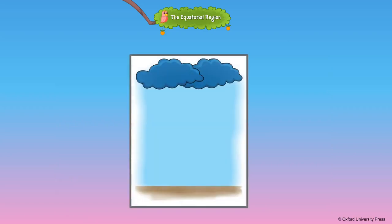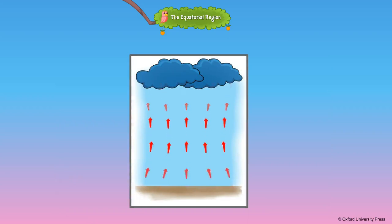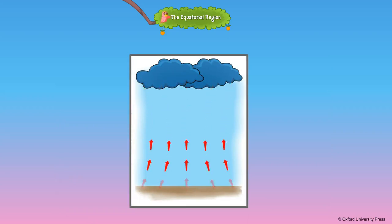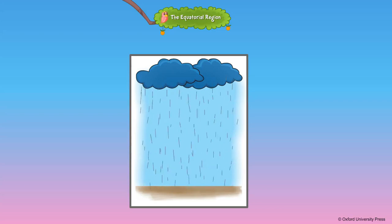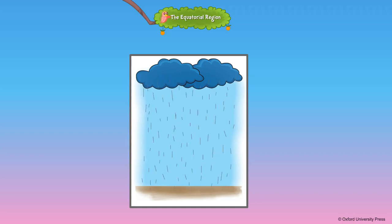The Equatorial Region receives the direct rays of the sun. The land becomes very hot, the rate of evaporation from the water bodies is high, and atmospheric humidity increases. The hot, moisture-laden air rises, cools, and by 4 o'clock almost every day there is precipitation or rainfall. This type of rainfall is called convectional rainfall.